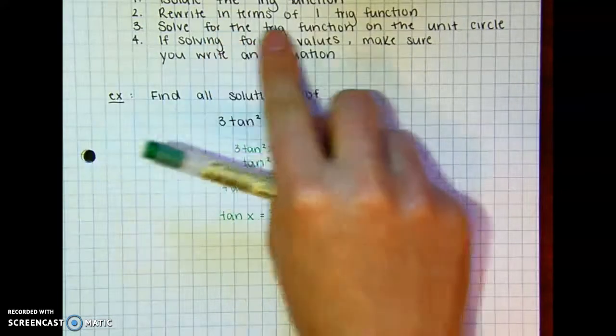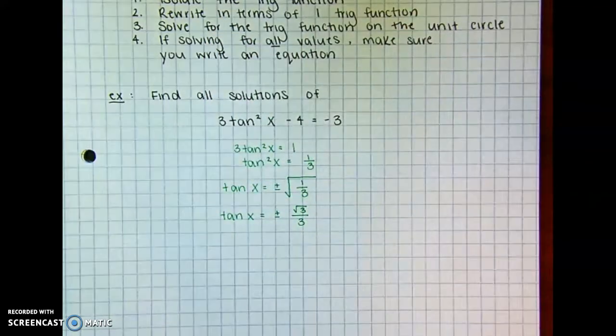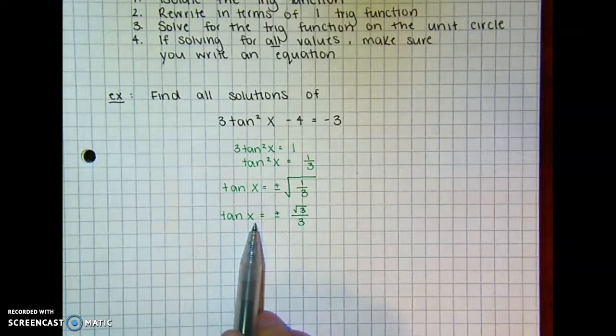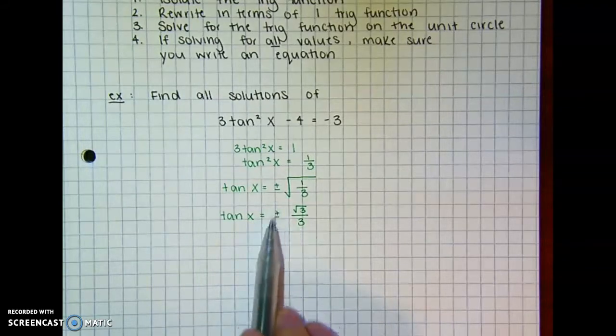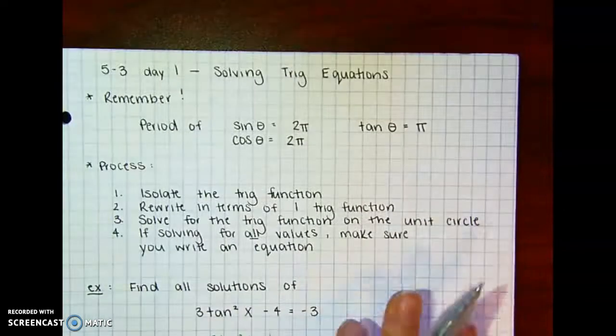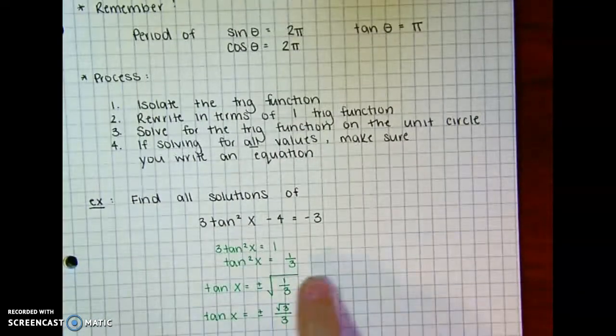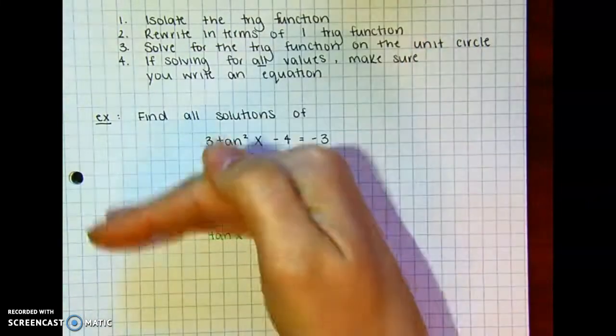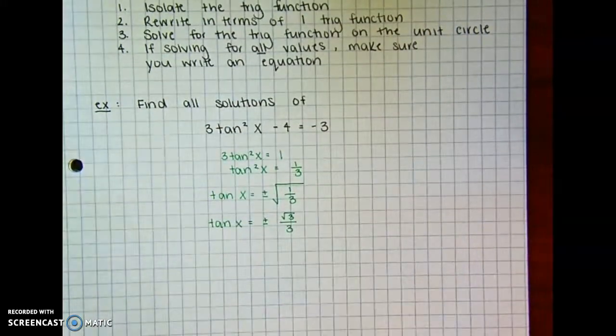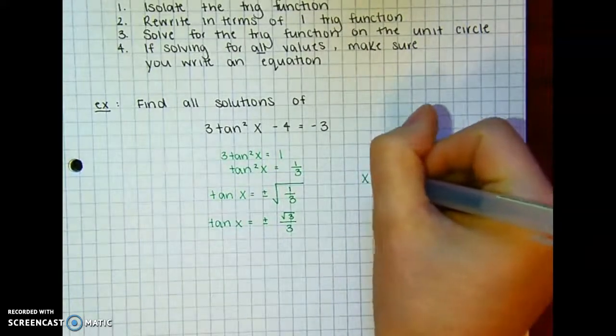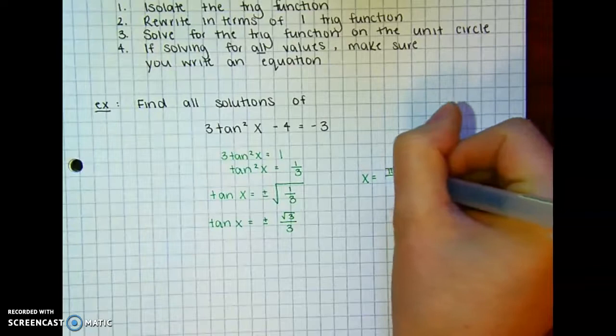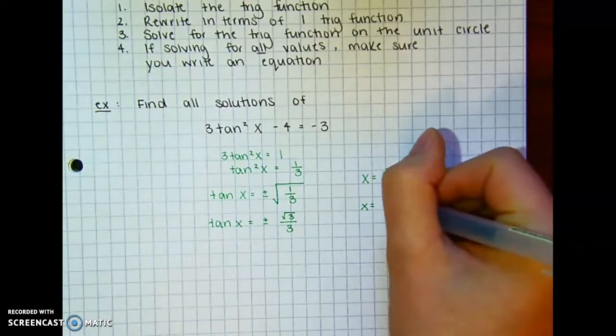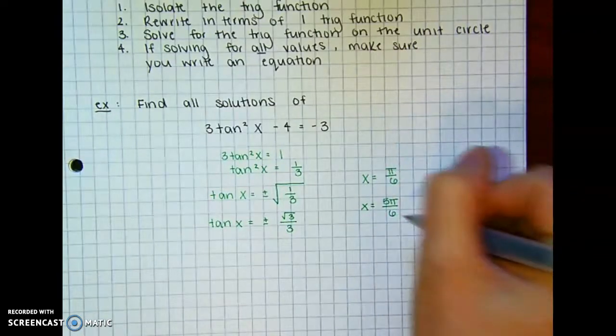So now we've got it solved, and now we need to solve for the trig function on the unit circle. So when I think about my unit circle, what x values, what angles are going to give me root 3 over 3, both positive and negative? So this is also where you need to keep in mind the period. So remember the period is π. So between 0 and π, what are my solutions? So there's going to be 2. First one is going to be π over 6, and then the second one is 5π over 6.